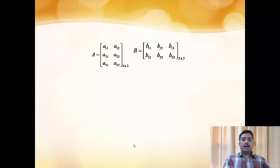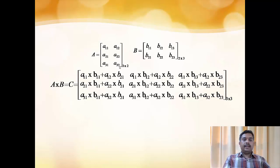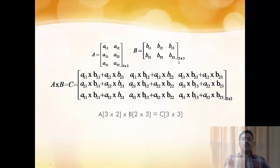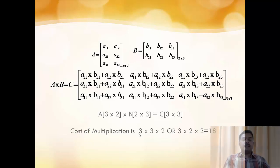Let us see how the cost of matrix multiplication is found out. Let A be a matrix of size 3×2 and B be a matrix of size 2×3. A×B gives us a matrix C with order 3×3. Each entry of this matrix involves 2 multiplications — that is, the number of columns in the first matrix or the number of rows in the second matrix. So the cost of multiplication is 3×3×2 = 18.